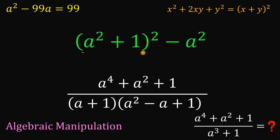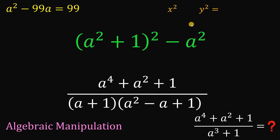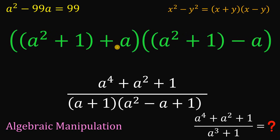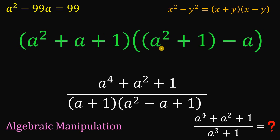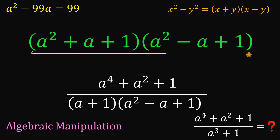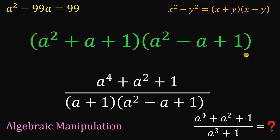From here, we have a number raised to the power of 2 minus another number raised to the power of 2, so we can apply the difference of two squares identity. Factoring this out gives us a squared plus 1 plus a, multiplied by a squared plus 1 minus a. Rearranging terms, the first factor is a squared plus a plus 1, and the second factor is a squared minus a plus 1. This is the factored form of our numerator.